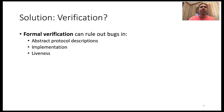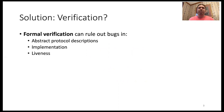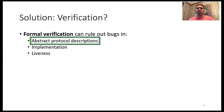One solution to this is formal verification, which can rule out bugs in all levels of the software stack — for example, in the abstract protocol descriptions, in the implementation of said protocols, in liveness bugs, and so on. For this talk, we're going to be focused on the abstract protocol descriptions.